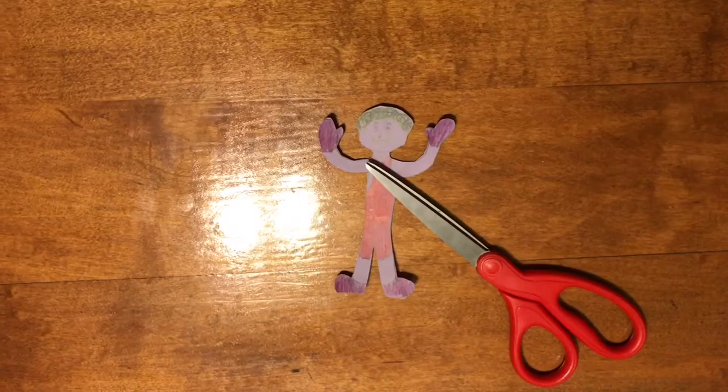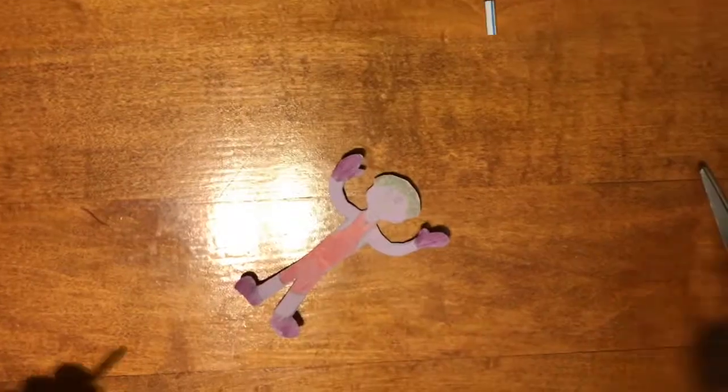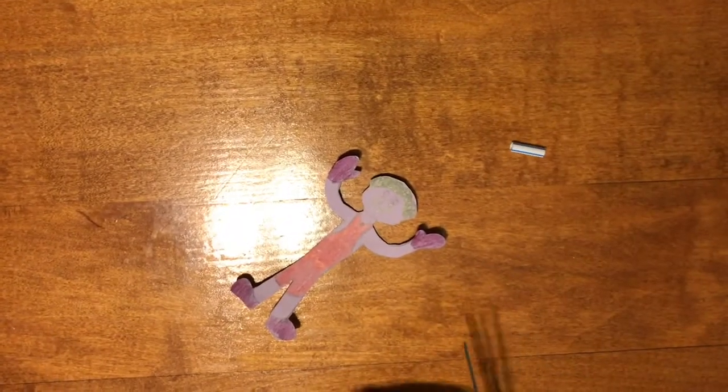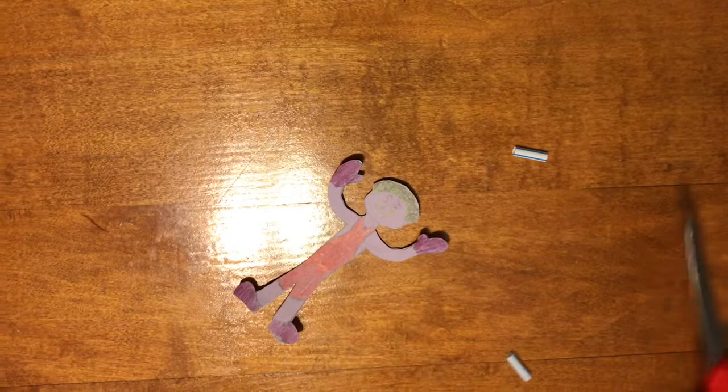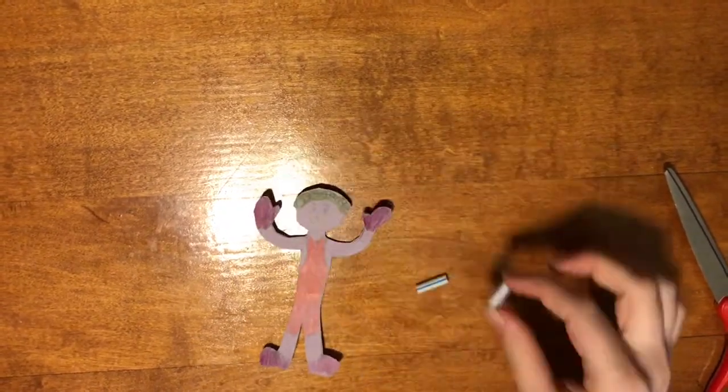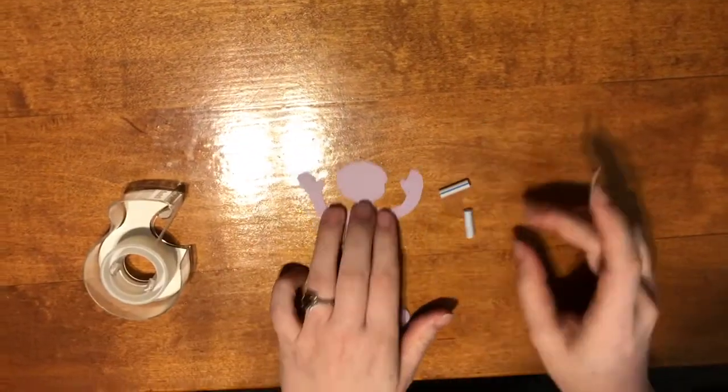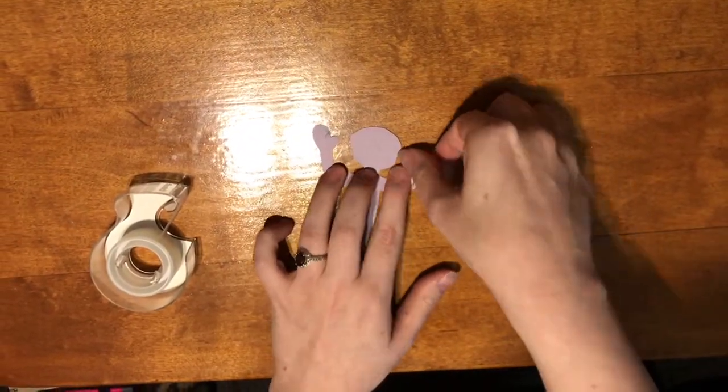Then, cut out your acrobat very carefully. Cut two small sections of straw. These are going to be taped to the back of your acrobat's hands. These are what it will use to climb the string.